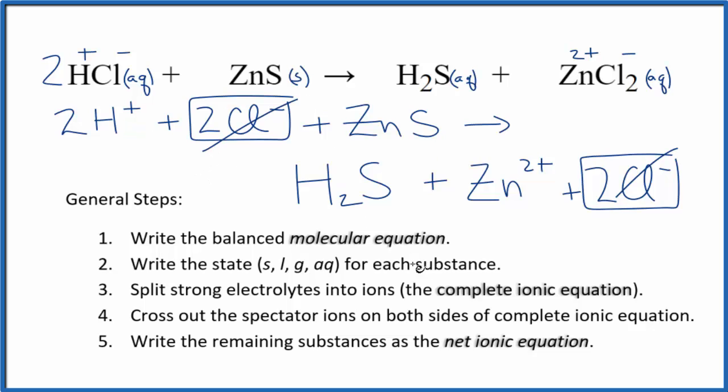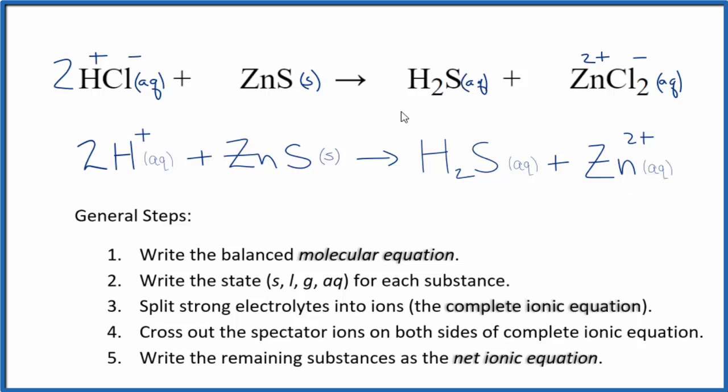Everything else is unique, though. So this is the net ionic equation for HCl plus ZnS. I'll clean this up and write the states in. So this is the balanced net ionic equation for HCl plus ZnS.